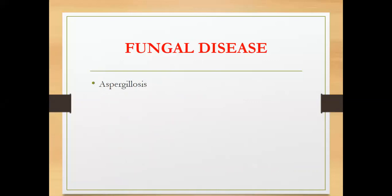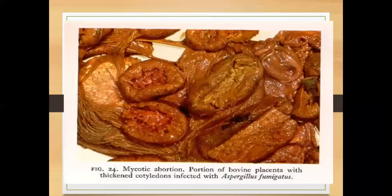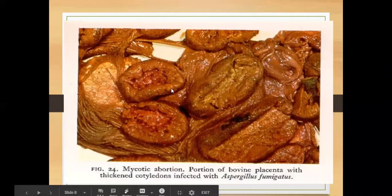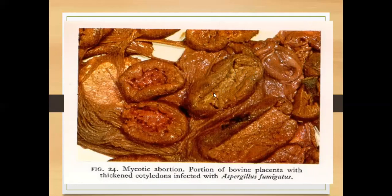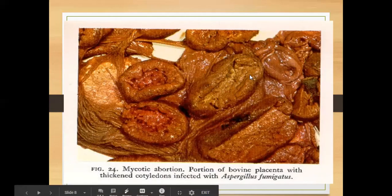Aspergillosis causes abortion in the middle and last trimester — what we call mycotic abortion. Shown here is a cotyledon and placenta from an aborted calf. A normal cotyledon is shown alongside a thickened one with yellowish-white plaques in the middle — those are the ones infected by Aspergillus fumigatus, causing the abortion.